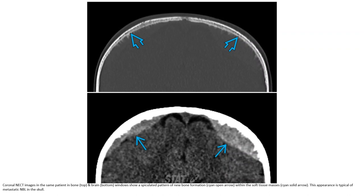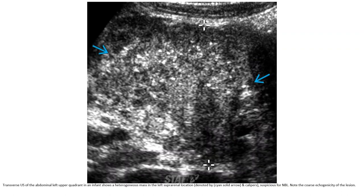Non-contrast-enhanced CT image in the same patient in bone window shows a spiculated pattern of new bone formation within the soft tissue mass — this appearance is typical of metastatic neuroblastoma in the spine. Ultrasound of the abdomen in the left upper quadrant in an infant shows a heterogeneous mass in the left supra-adrenal region, suspicious for neuroblastoma. Note the coarse calcification of the lesion.